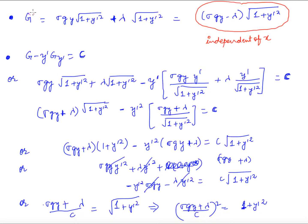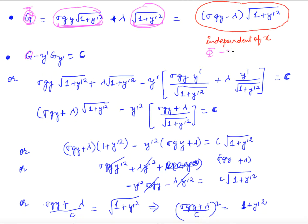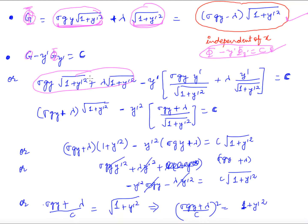To solve this, I form the combined integrand Φ = f + λ·g, where f is the integrand to minimize and g is the integrand in the constraint. Now I apply the Euler's equation on this new integrand Φ. Because Φ is independent of x, the Euler equation takes the reduced form: Φ − y'·(∂Φ/∂y') = constant.